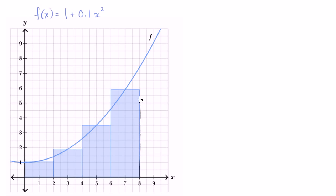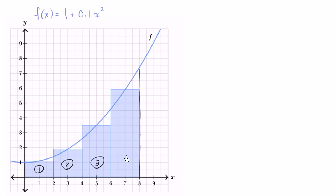The way that this diagram works, or the way that we're attempting to do it, is by splitting it into four rectangles. So we could call this rectangle one, this is rectangle two, rectangle three, and rectangle four.